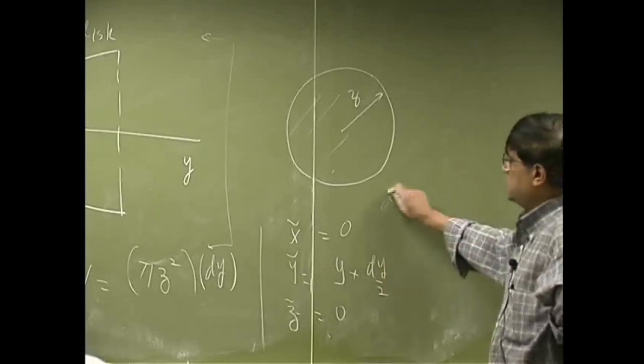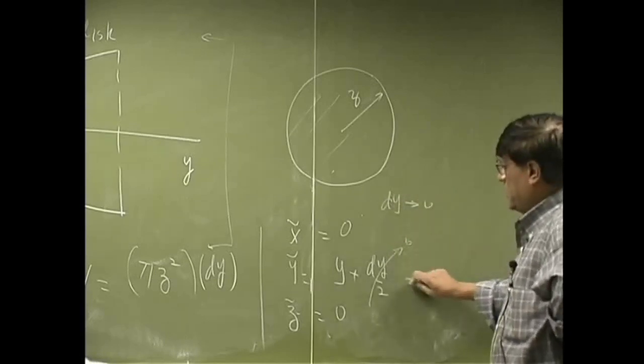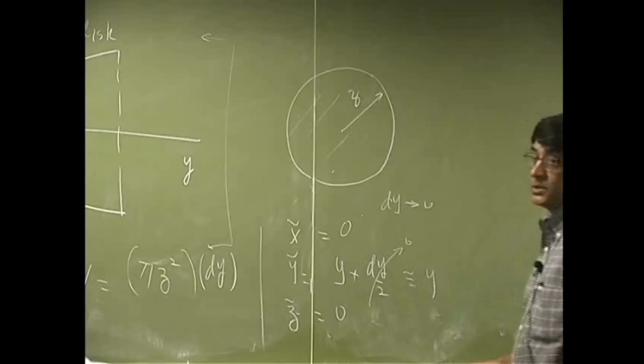And, again, since dy is approaching 0, you could drop this, and I could take this approximately as y.